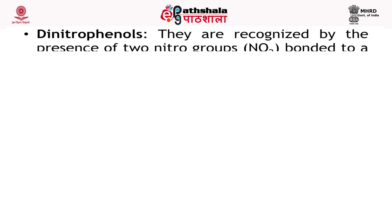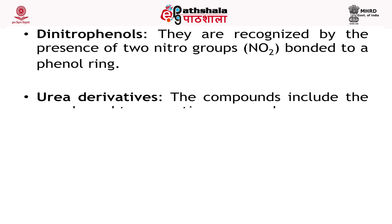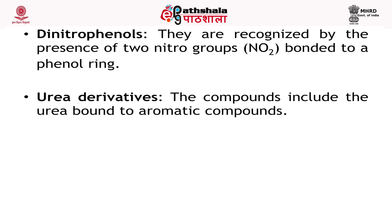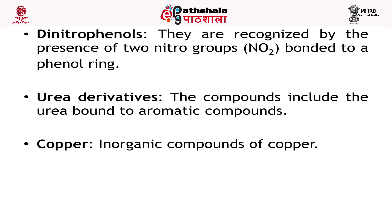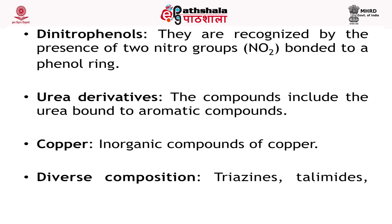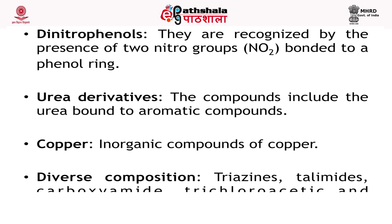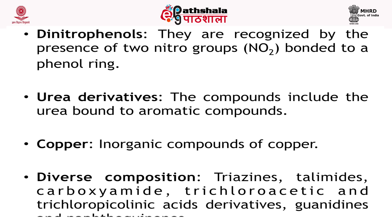Dinitrophenols are recognized by the presence of two nitro groups bonded to a phenol ring. Urea derivatives include compounds with a urea bound to aromatic compounds. Copper, inorganic compounds of copper. Diverse composition types include triazines, carboximides, trichloroacetic and trichloropicolinic acid derivatives, are also examples of pesticides based on chemical composition.